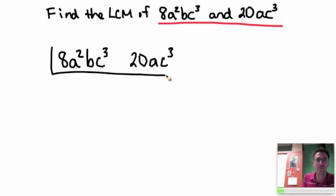Just like with GCF, I'm going to start with the numbers. What's a common factor of both 8 and 20? Well, I know 4 goes into both of those. So 8 divided by 4 is 2a squared bc cubed, and 20 divided by 4 is 5ac cubed.